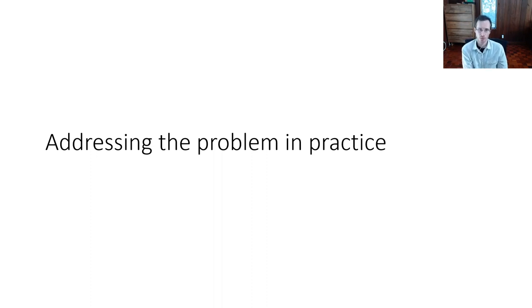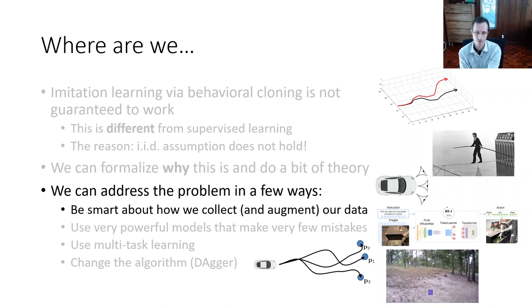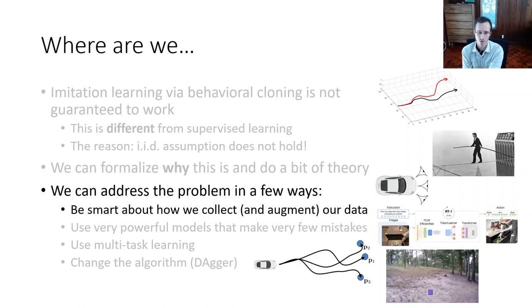The remainder of today's lecture will focus on more practical methods that can make behavioral cloning work, as well as some other algorithms. We'll talk about how the problem can be addressed by being smart about collecting your data, by using very powerful models that make comparatively fewer mistakes, by using multitask learning, and by changing the algorithm. The one method you will implement in homework is DAGGER, and I'll go through that somewhat more precisely.